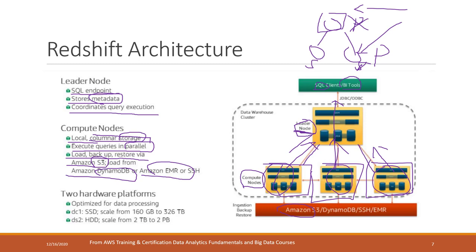Compute nodes can also load data from DynamoDB or EMR. There are two hardware platforms optimized for data processing: SSD, which is more expensive, or HDD, which is cheaper but can provide more data storage.